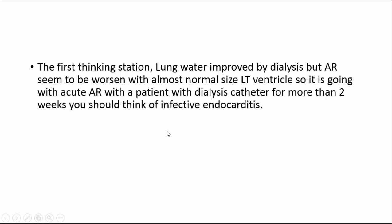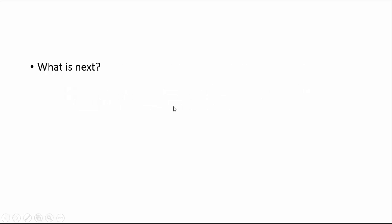This is the first thinking station. To be a good intensivist you need to be flexible and change your thinking according to changes in the patient. Lung water improved by ultra-filtration, but aortic regurgitation is worsening on an almost normal-sized left ventricle — no ballooning of the left side. This is going with an acute process. What acute process can cause acute aortic regurgitation in a patient with a dialysis catheter in place for more than two weeks? You should think about infective endocarditis. Fortunately, we have a TEE available in our ICU.